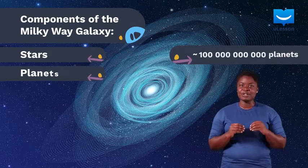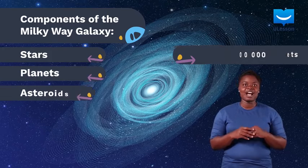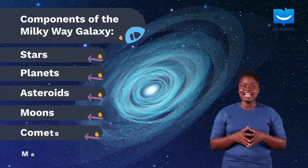About 100 billion planets, including our planet Earth, asteroids, lots of moons, comets, and meteors.